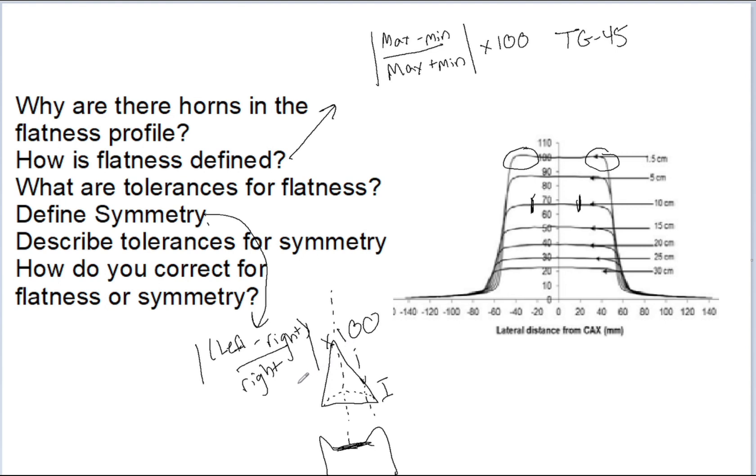The tolerance is very similar to the flatness. You want it to match your treatment planning system as well as the manufacturer's specifications. For symmetry, Varian specs are plus or minus 2%. And TG-40 says it could be plus or minus 3%.